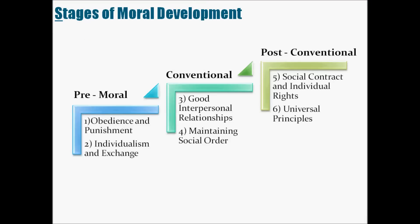Now let's look at the stages of moral development. There are three stages essentially: premoral, conventional, and post-conventional. The sub-stages, which I've numbered as the actual stages of development, are: Stage 1 — obedience and punishment; Stage 2 — individualism and exchange; Stage 3 — good interpersonal relationships; Stage 4 — maintaining social order; Stage 5 — social contract and individual rights; and Stage 6 — universal principles, which is a discarded level.